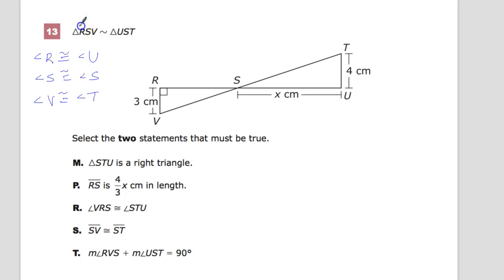And also RS would correspond to US. SV would correspond to ST. And VR would correspond to TU. We learn all that just by looking at the similarity statement.